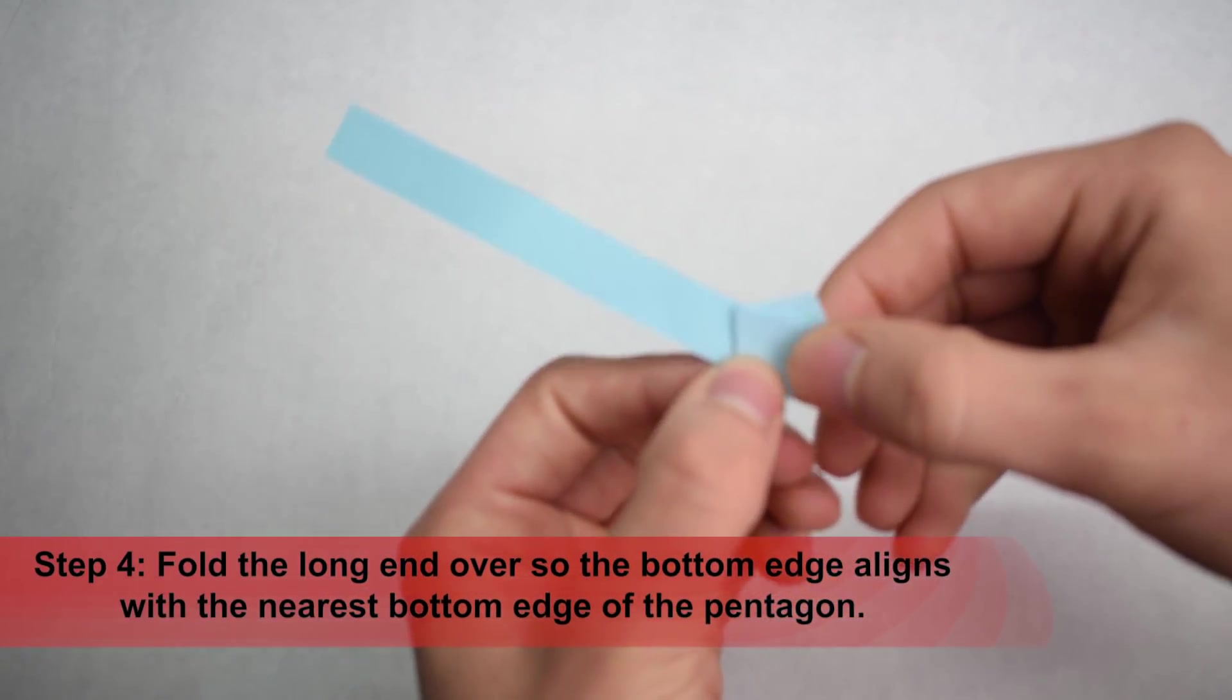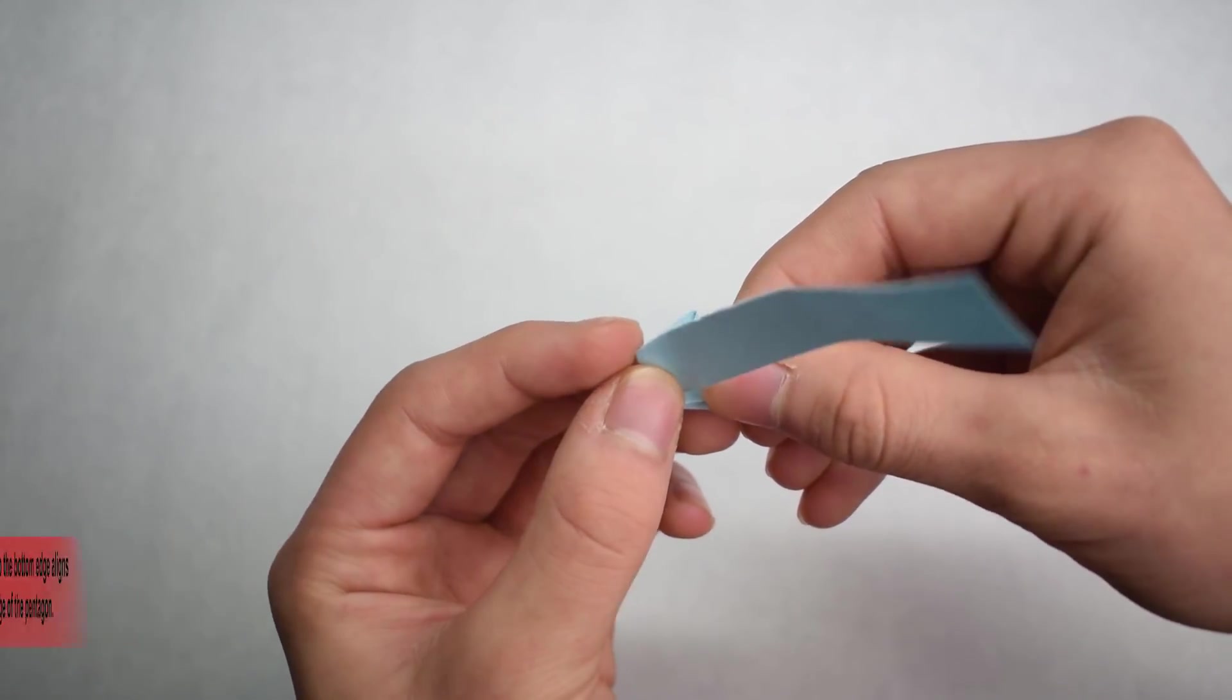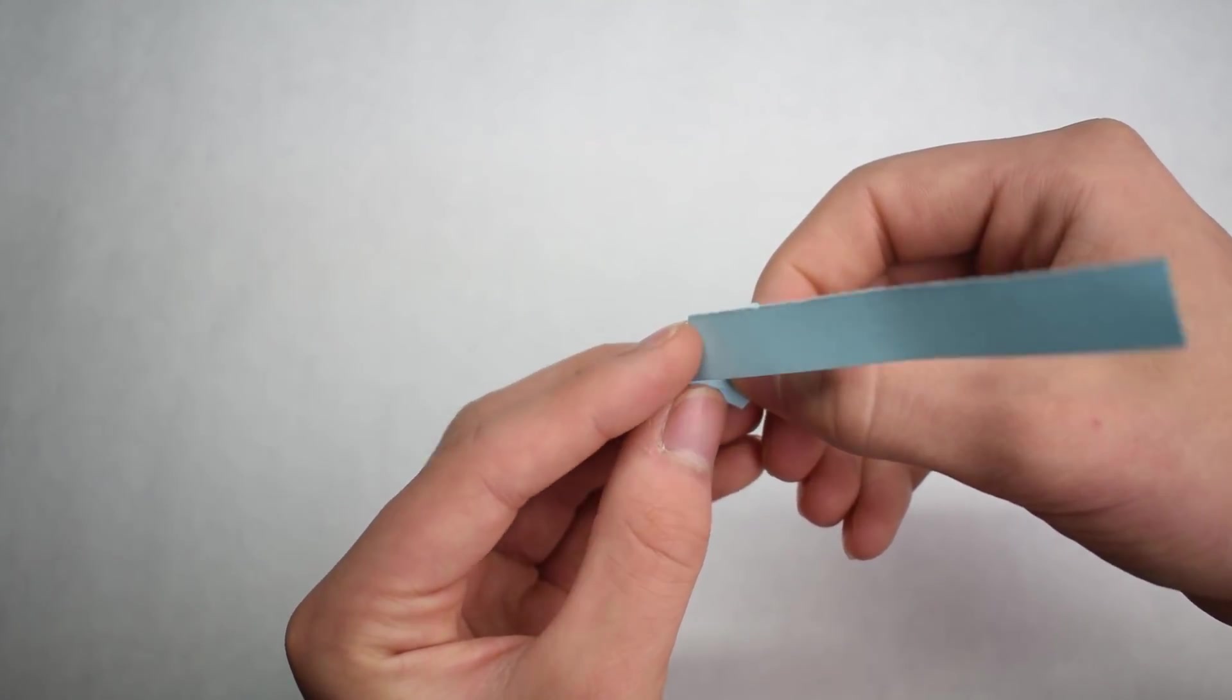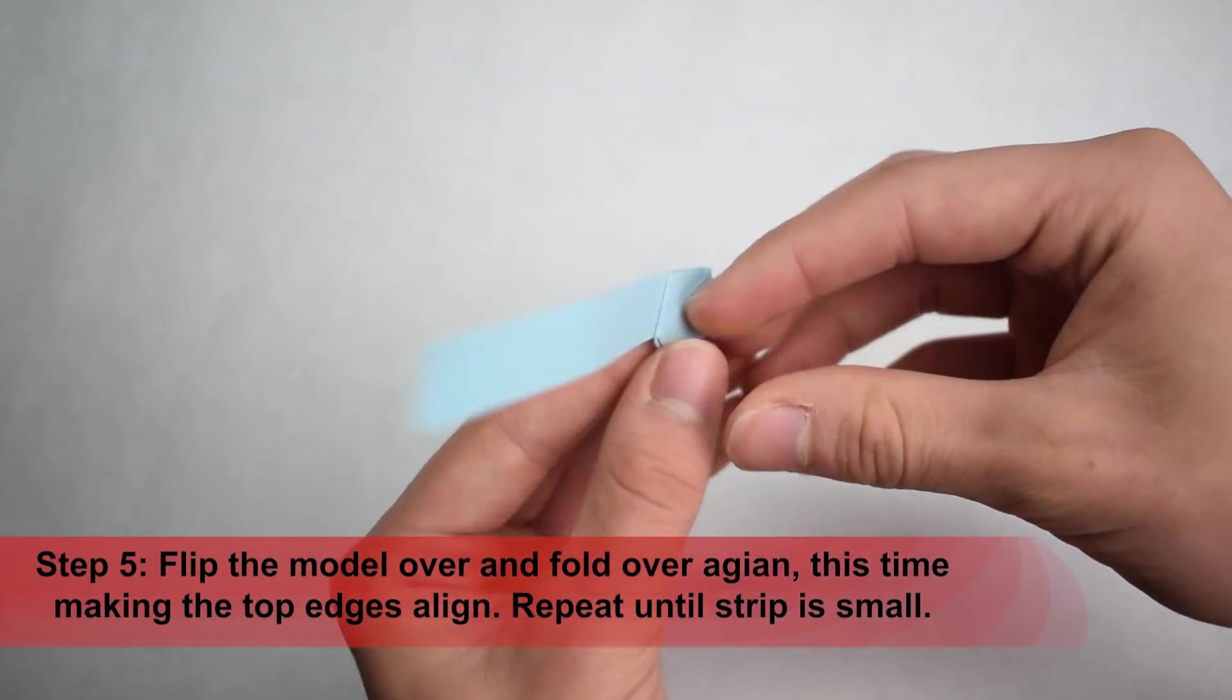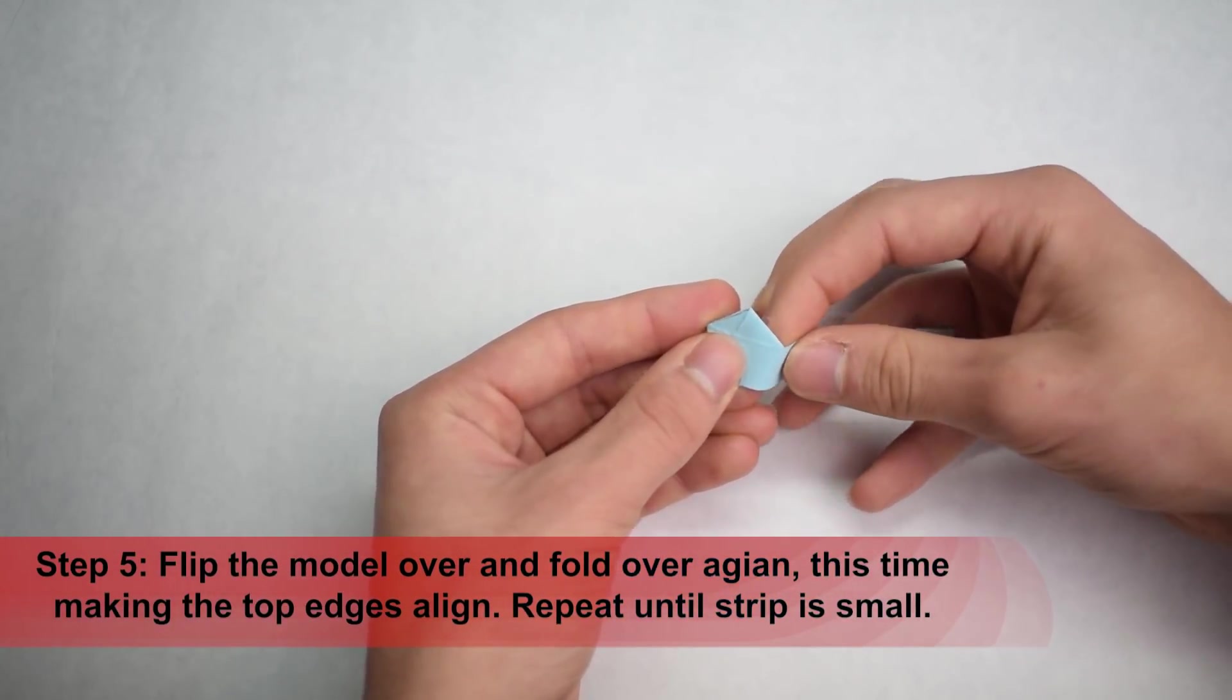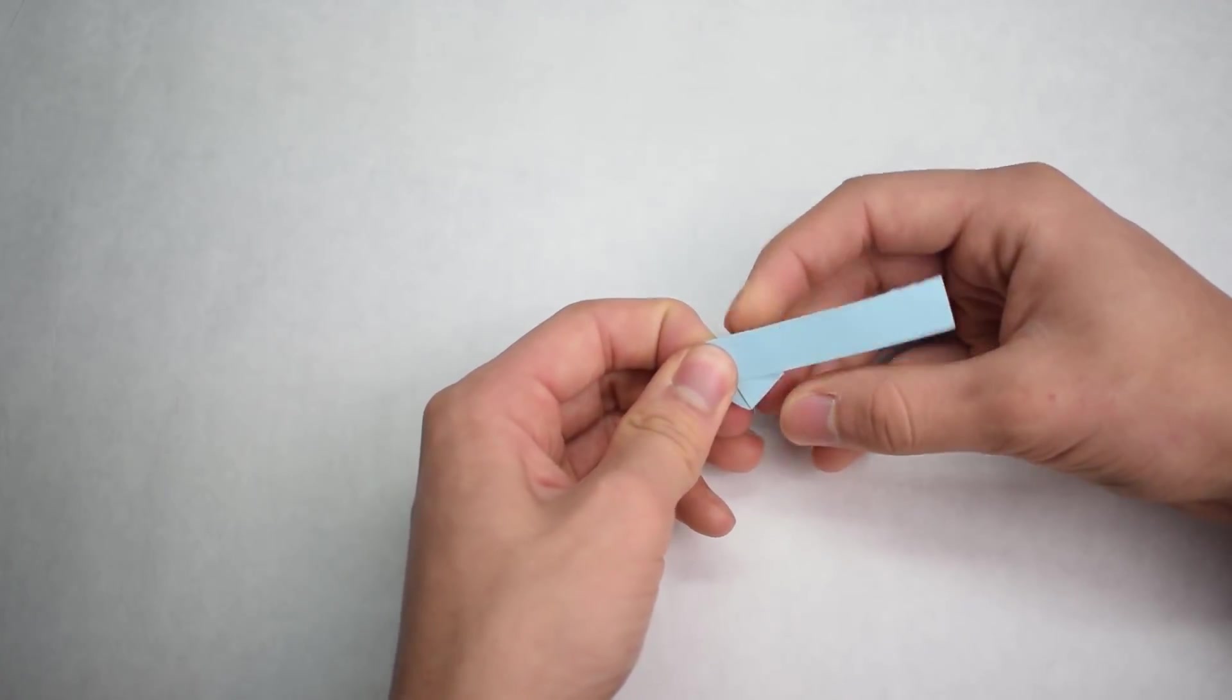Now flip it over and you'll see the same thing happening. However, this time when you fold over, the top edge is going to line with the top edge of the pentagon. It's going to alternate every time you wrap it around. Once you've done that, flip it over and then repeat. You're basically just going to keep wrapping it around and around every single time. Just keep going until you have just a little stub left over.